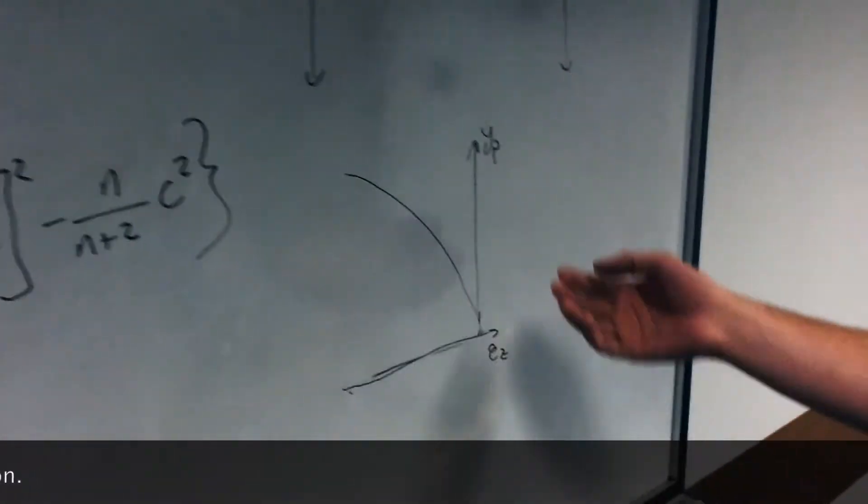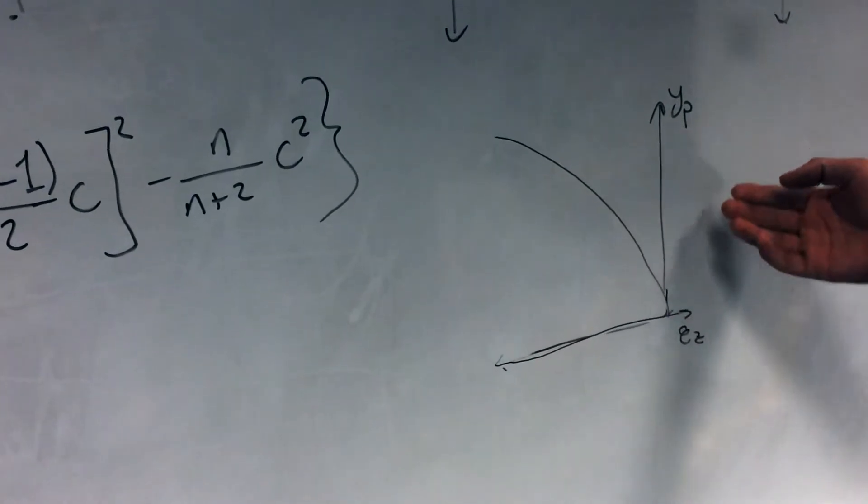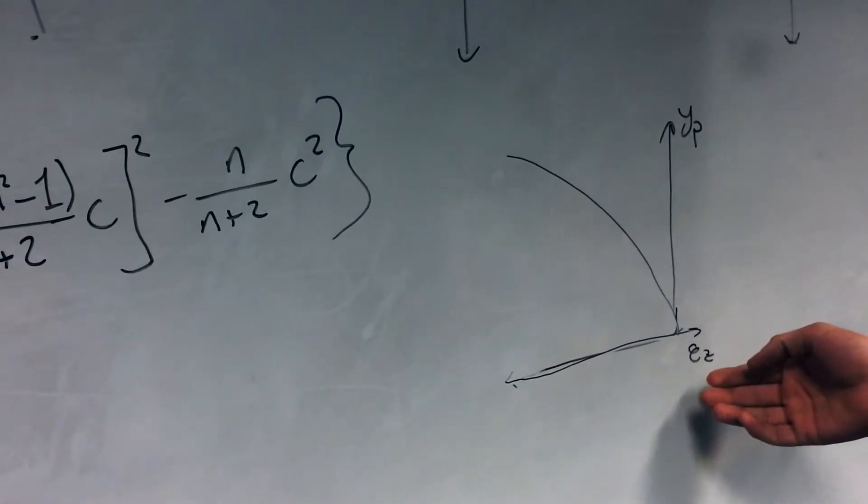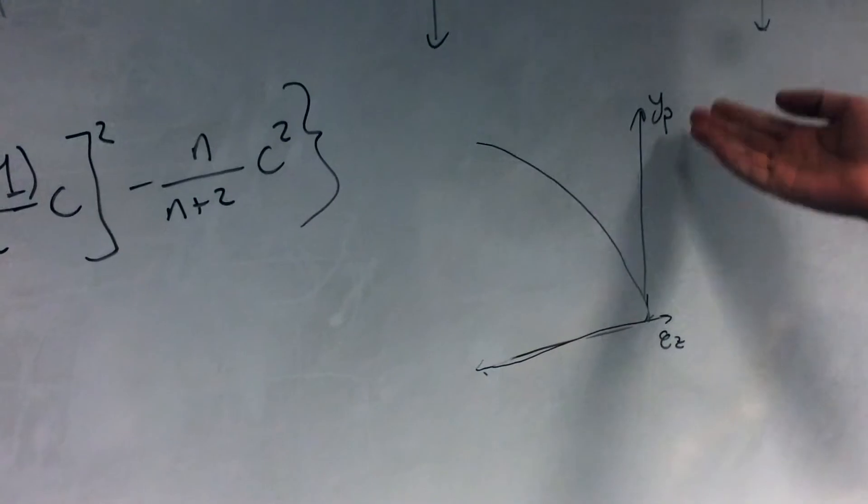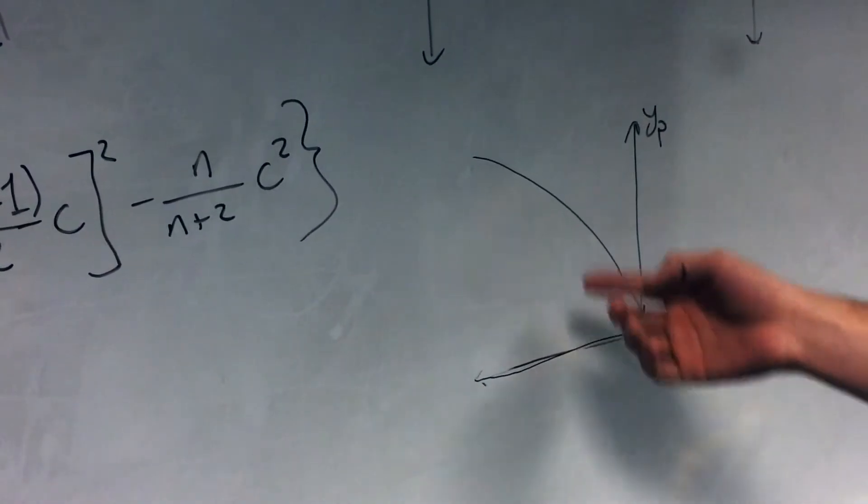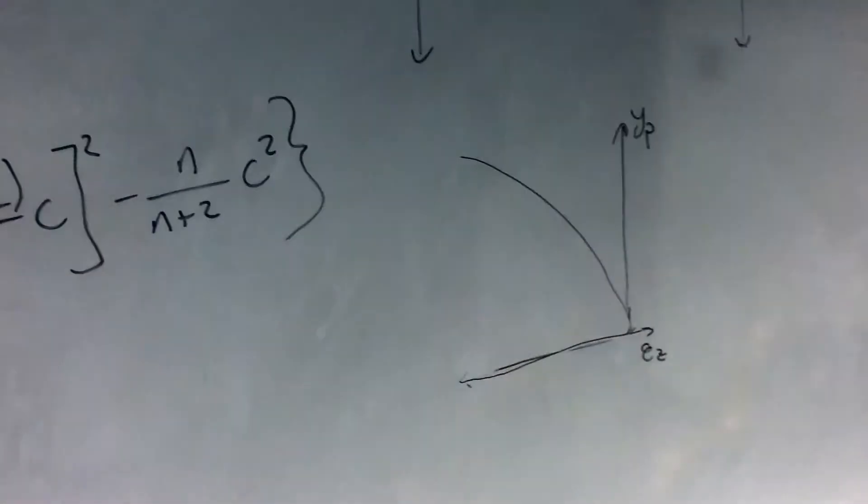Here we have a graph for longitudinal aberration, which gives us the error in the z direction depending on the pupil position. As we increase the pupil position, the error in the z direction increases negatively.